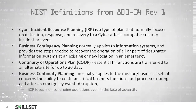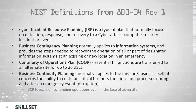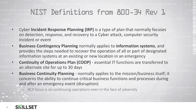Our business contingency planning typically applies to our information systems and provides the steps needed to recover information systems operations at our existing location or at a new location after an emergency. Our Continuity of Operations Plan, or COOP plan, focuses on making sure that we can transfer our essential IT functions to an alternate location for up to 30 days.